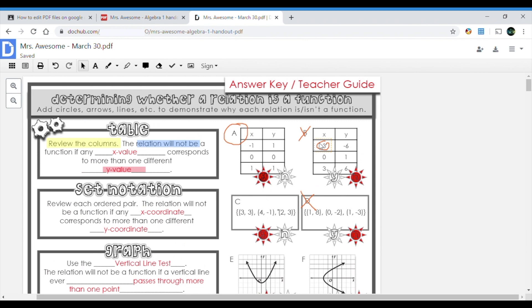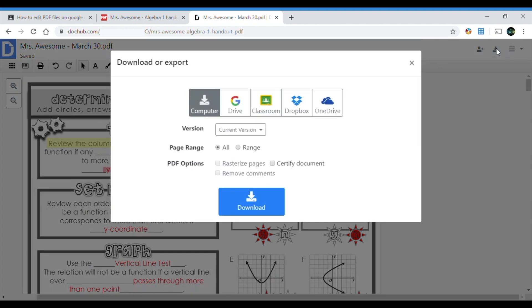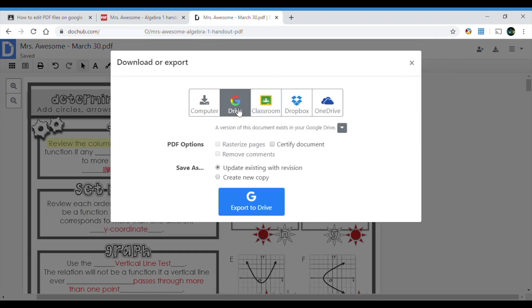So now we're gonna save our work. We're gonna click on the download and export button, which is between the little people person and the three lines. Click on that and you're gonna go to Google Drive. Now you can either use this right here, update existing with revision. I've been playing with this for a while. Sometimes it takes a while for it to show up and it kind of freaks me out because I'm like, did it save it? Did it not? So just to be on the safe side, I found it that it's easier just to create a new copy.